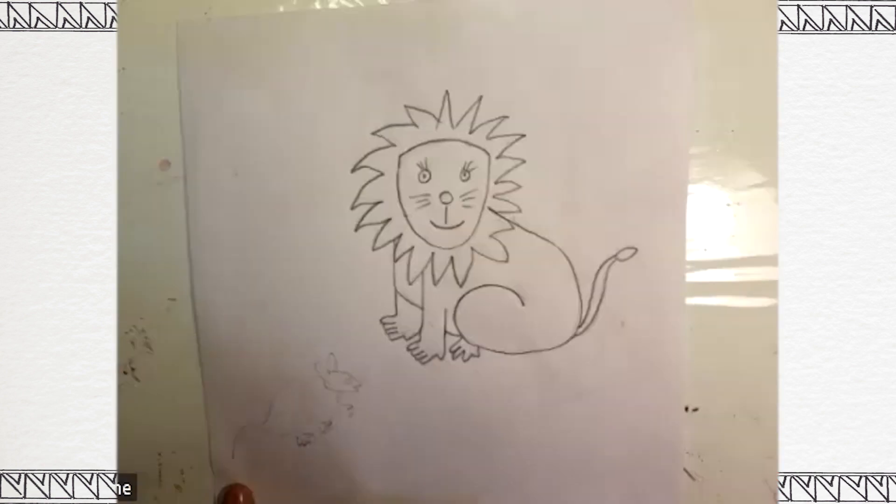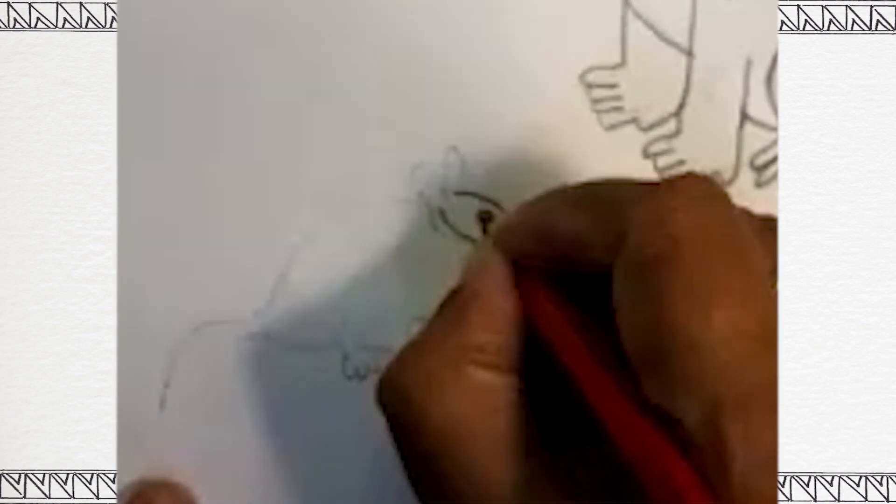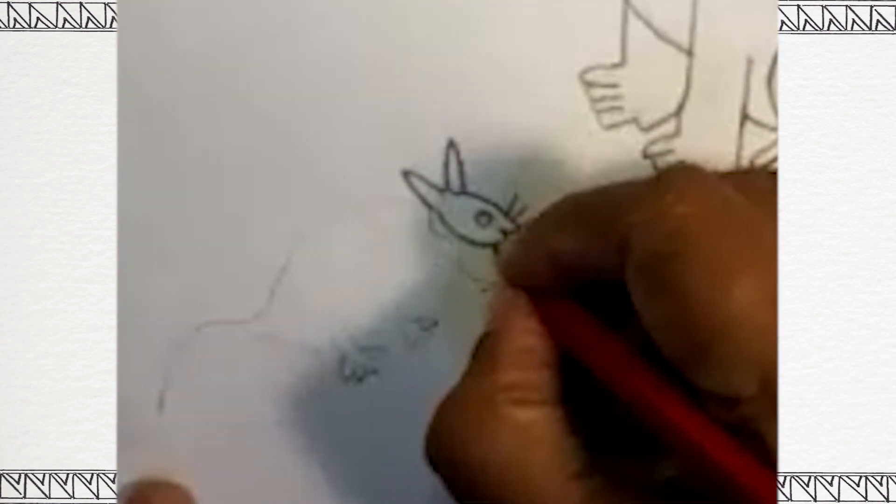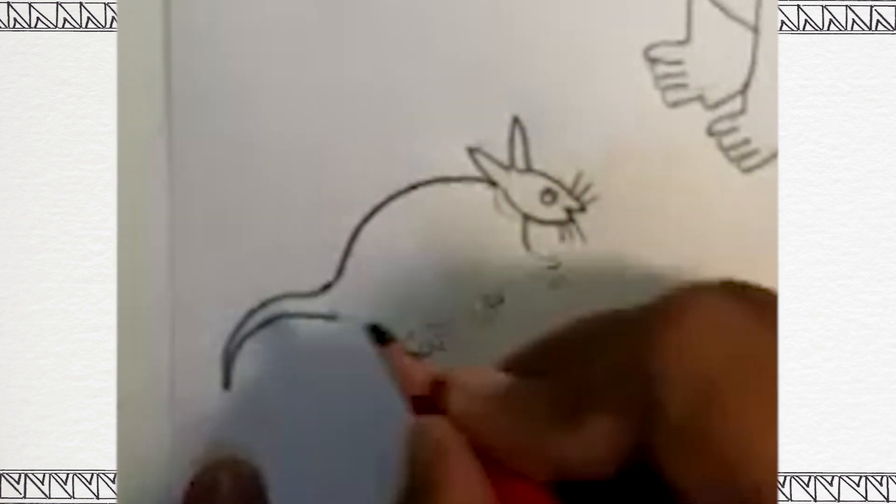You know how to draw a mouse? Very simple. First, let's draw a face, a triangular face, one round eye, two triangular ears and show some whiskers. Now, show the body of the mouse.